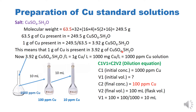If we add 3.92 grams of copper sulfate pentahydrate into a one-liter (1000 mL) flask and make its volume up to the mark with distilled water, this solution will become a 1000 ppm copper solution. 3.92 grams of copper sulfate contains one gram of copper per liter. To convert one gram into milligrams we multiply by 1000, giving 1000 milligrams of copper per liter. Milligrams per liter and ppm are the same concentration unit.